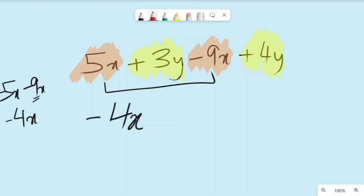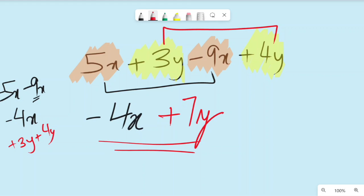Then we will bring y's together. I think they both are positive, so it's easy to bring them together. Positive 3 and positive 4 will give you positive 7y. And that's our solution to it. We don't have to solve it anymore.